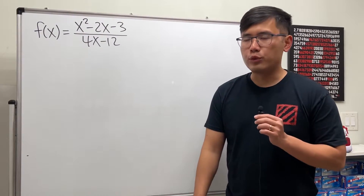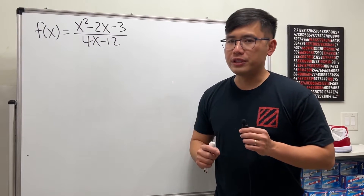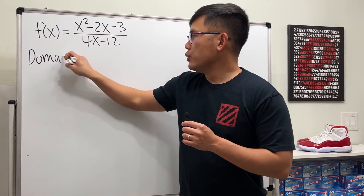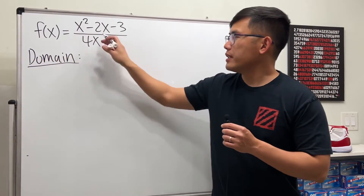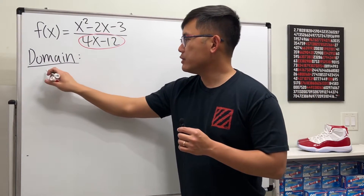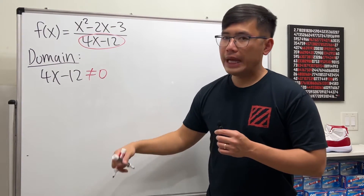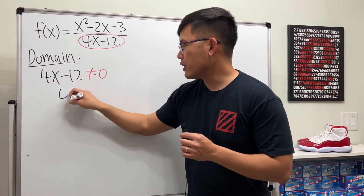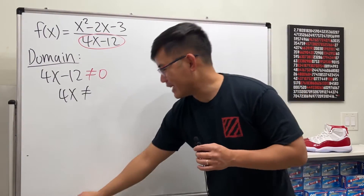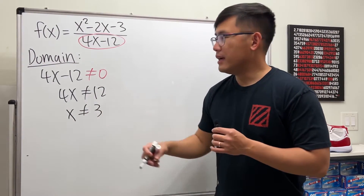Here I'm going to show you how to find the domain and the range of this rational function — this can be really tricky so pay close attention. First, for the domain, remember you always look at the bottom and set it not equal to zero. We have 4x minus 12, so we set 4x minus 12 not equal to zero, which gives us 4x is not equal to 12.